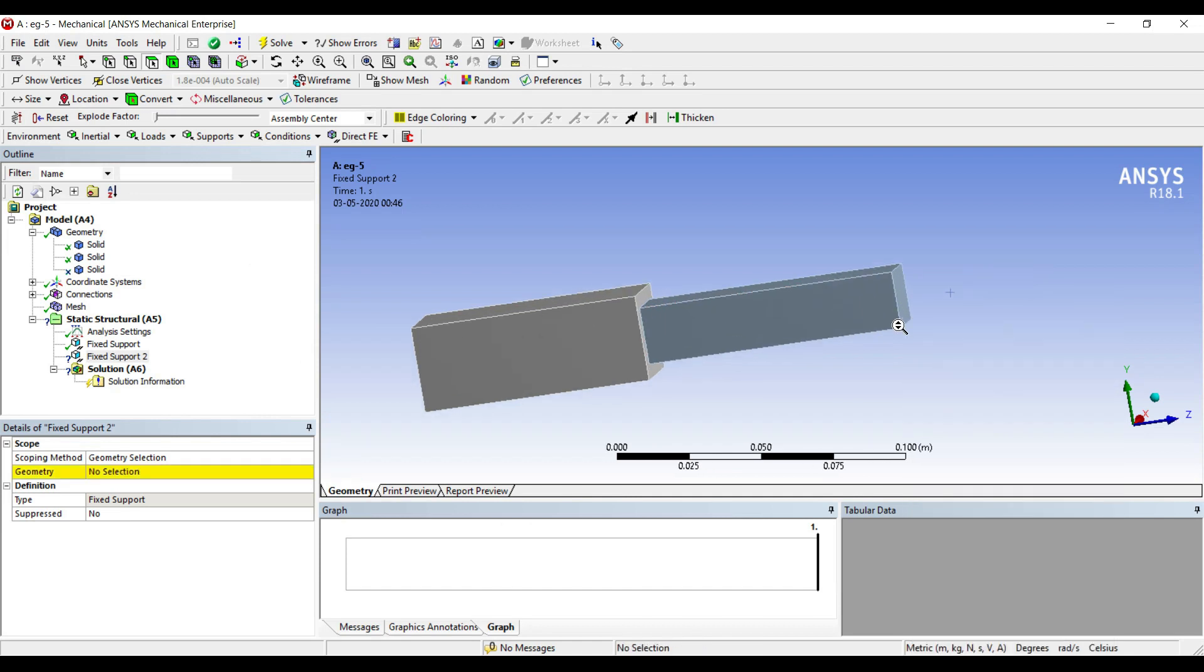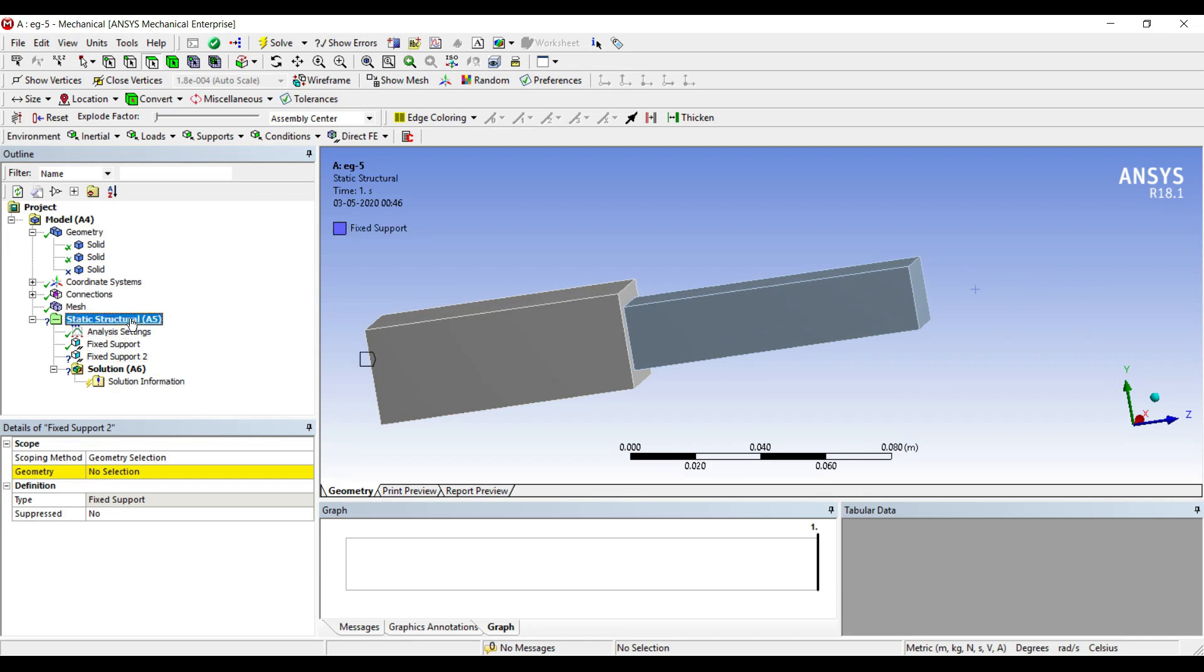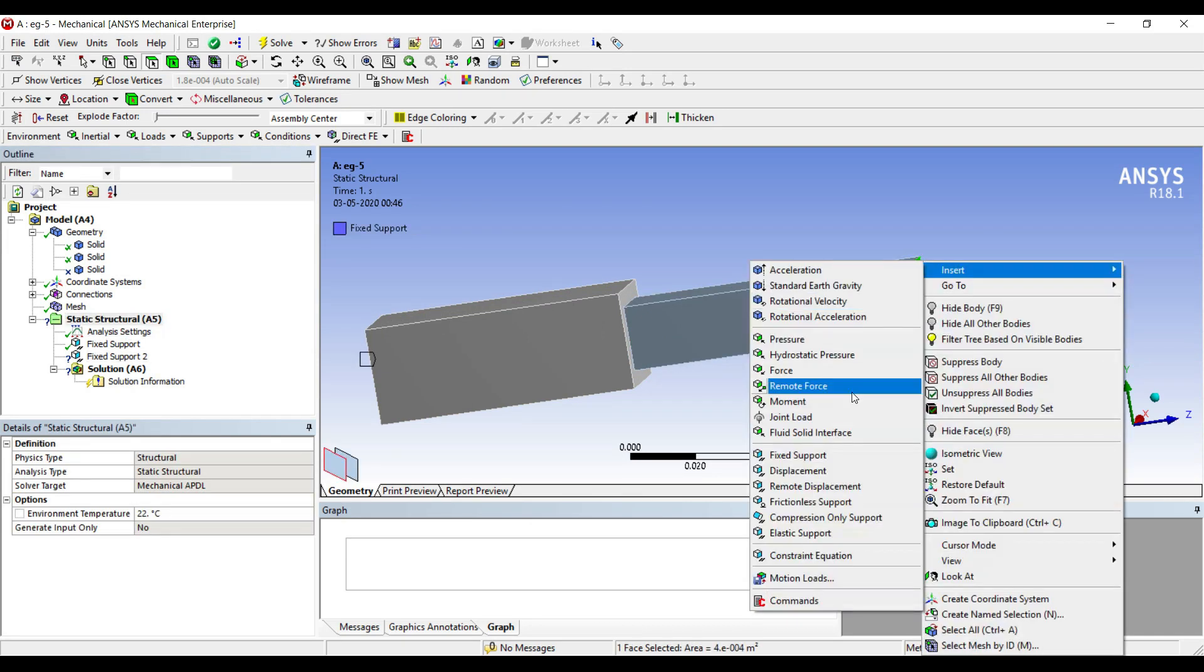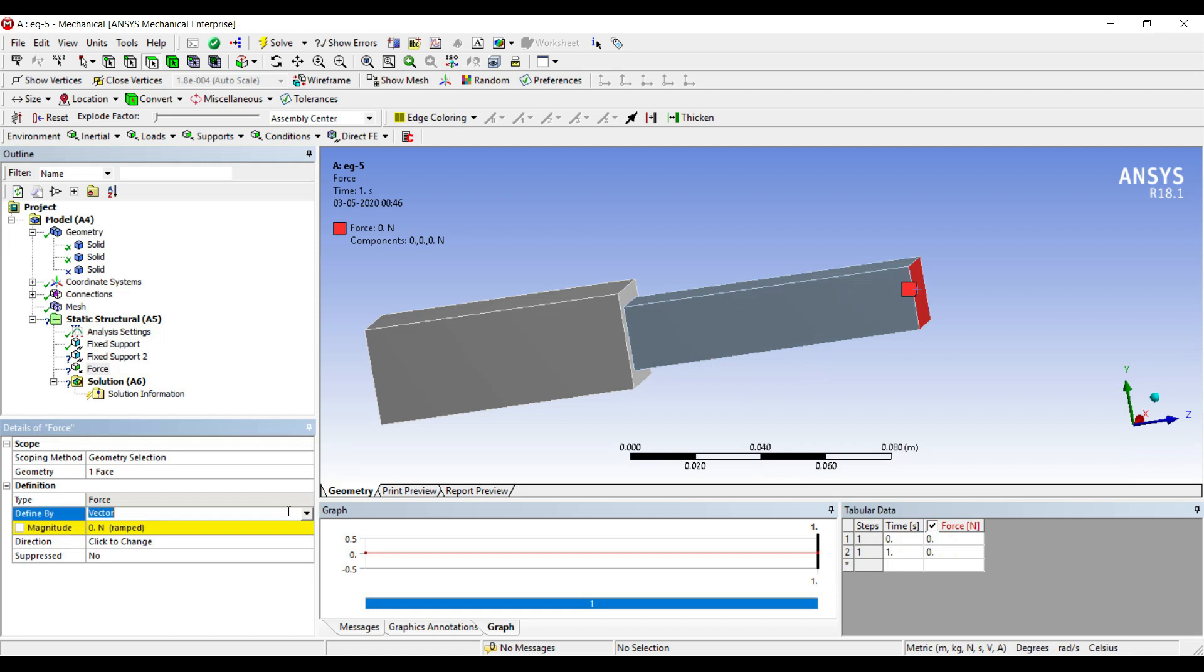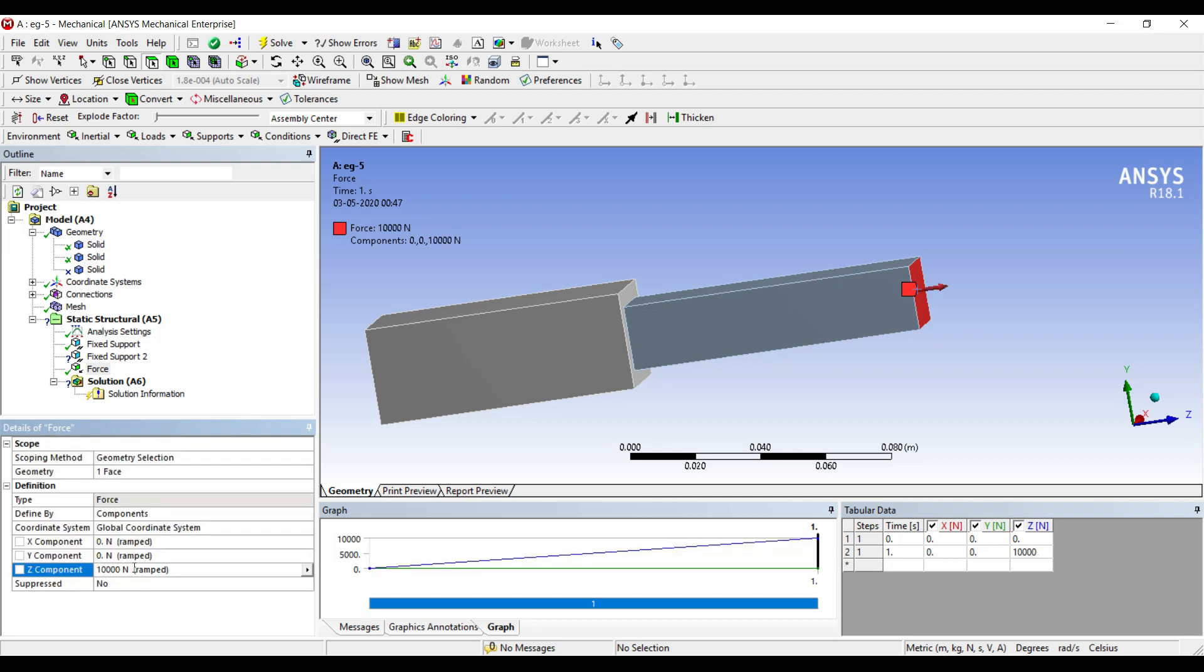I will go to static structural, right click, insert, force. It is along z direction, 10 kN.